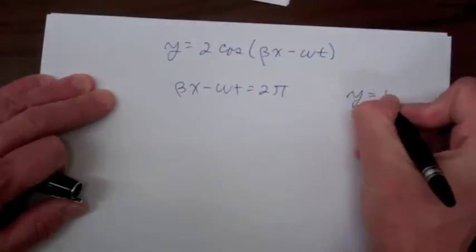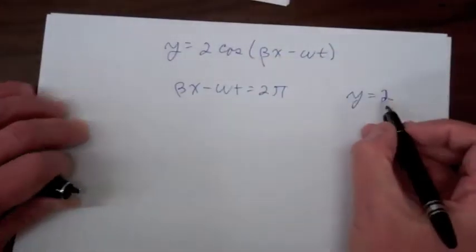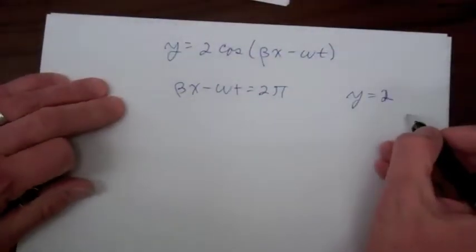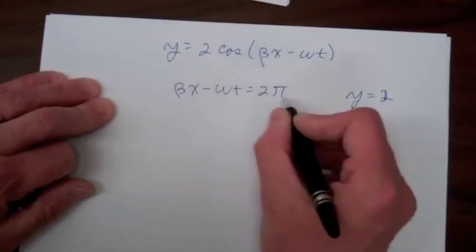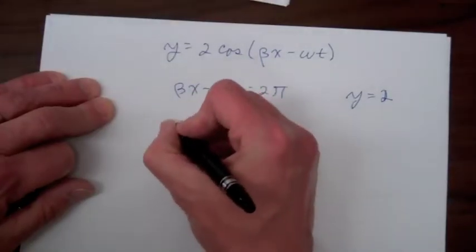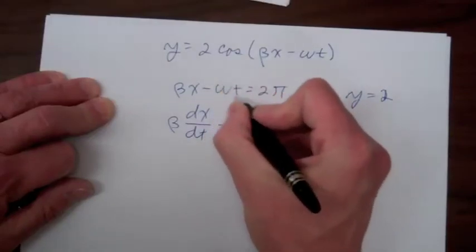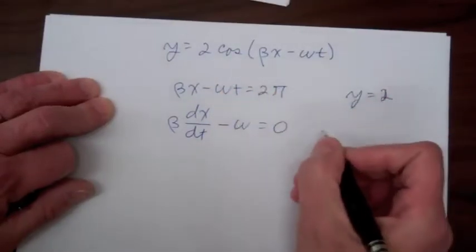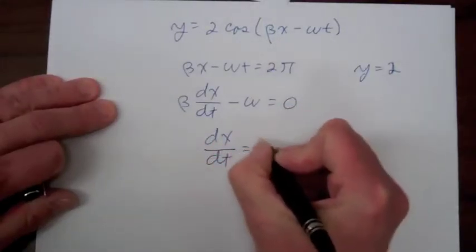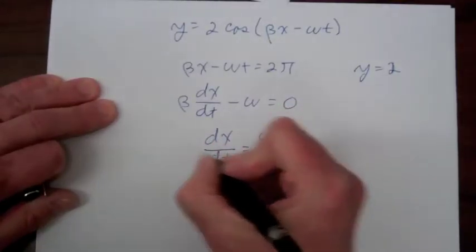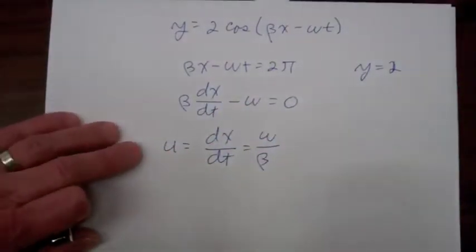When that occurs, y remains 2 because the cosine retains a value of 1 — you're riding on the crest of the wave. So again, taking the derivative with respect to time: β(dx/dt) - ω = 0, since the right-hand side is a constant. Solving for dx/dt gives ω/β, which is the velocity of our wave.